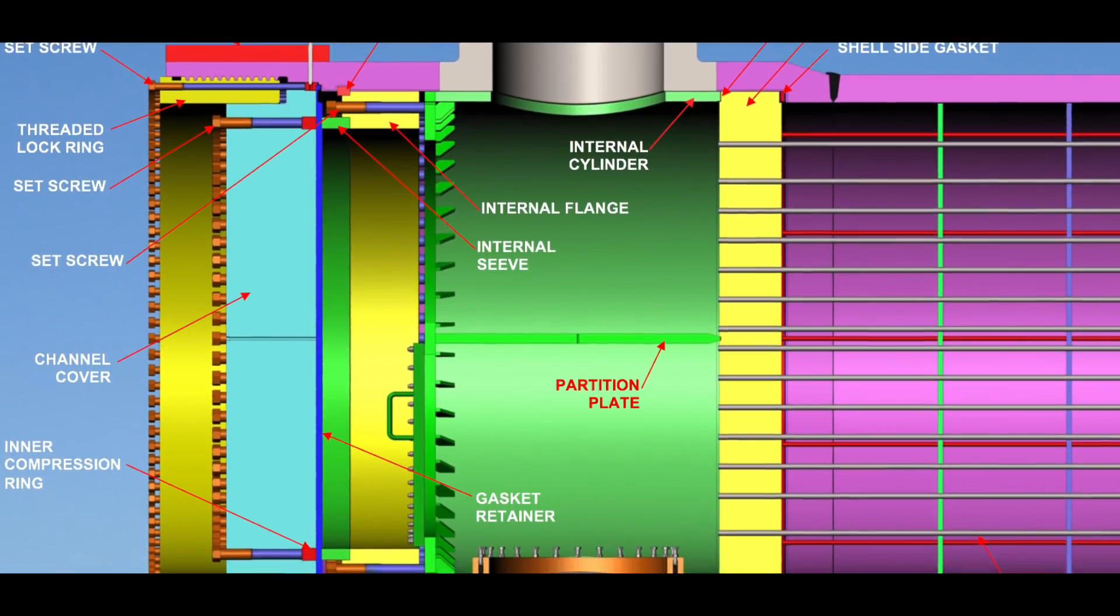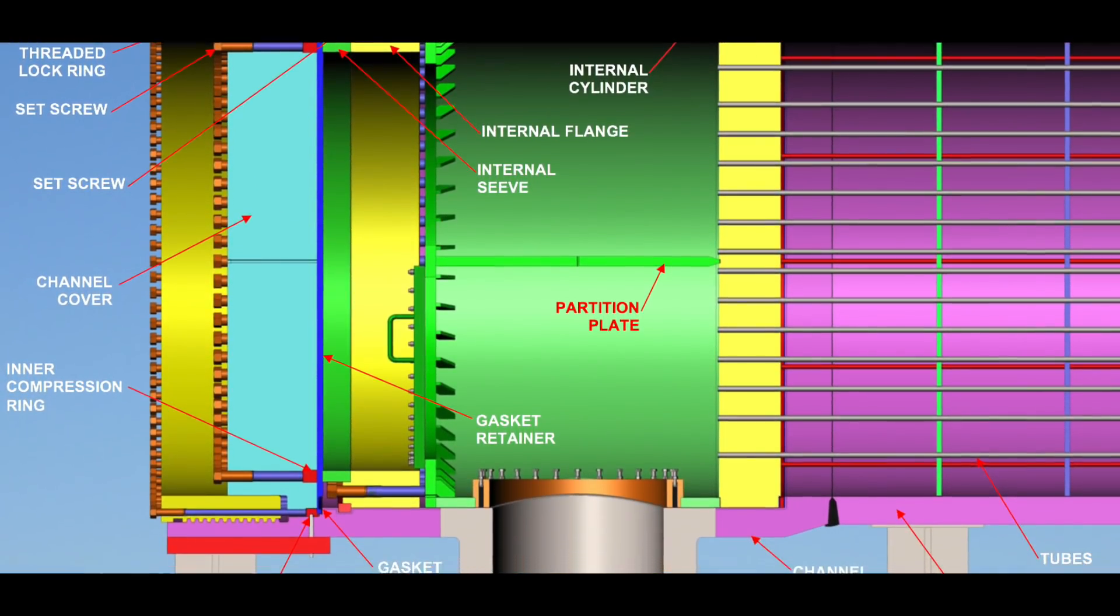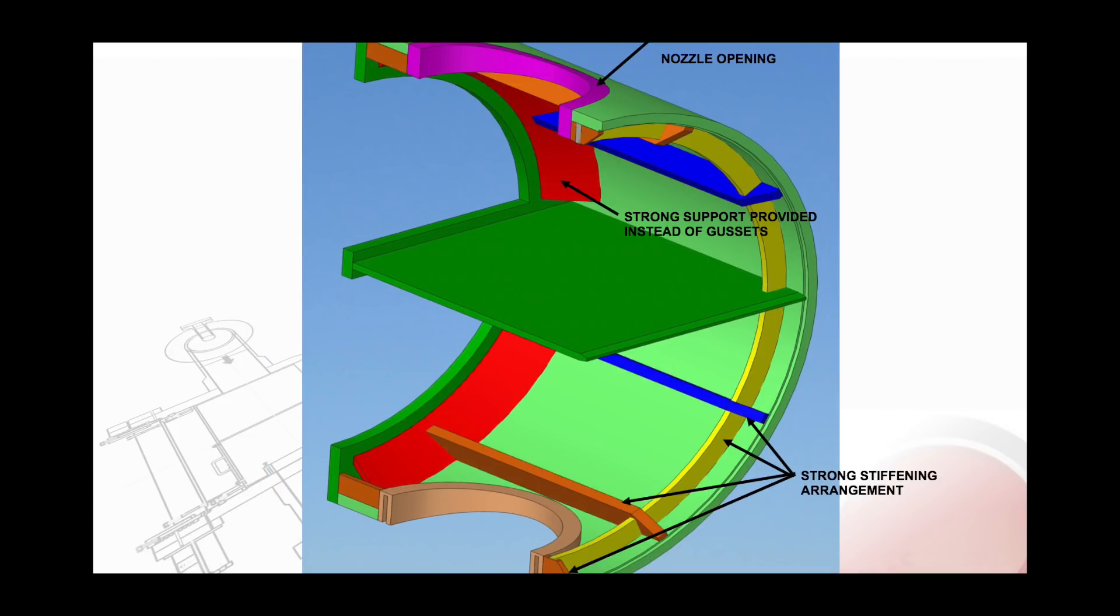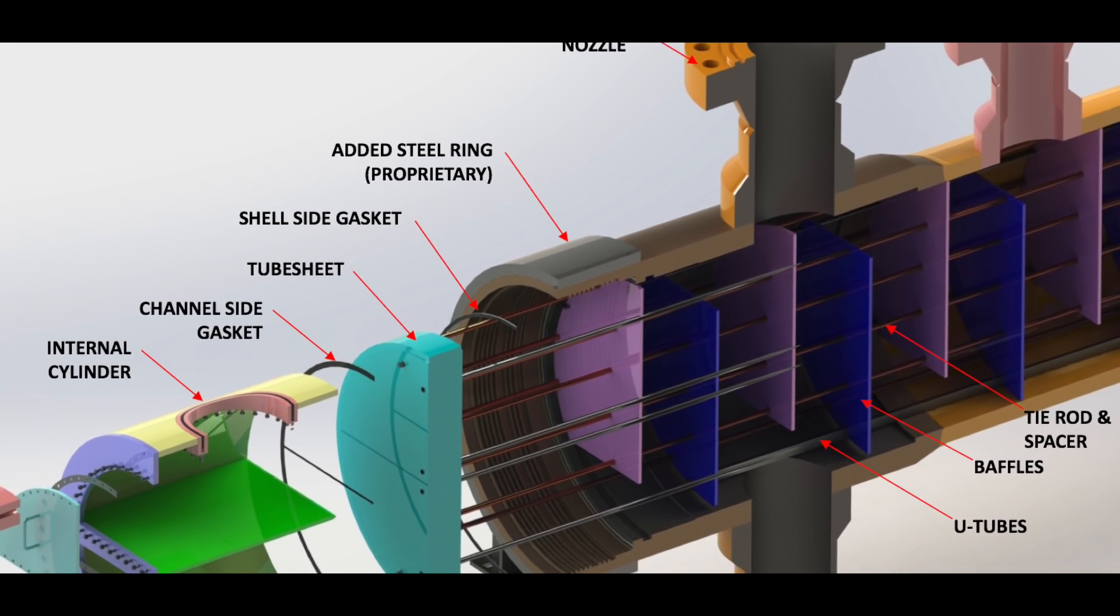Point 8: Where the shell side pressures are higher than the tube side pressures, the channel cylinder has to be rigid enough to uniformly transfer the bore load to the gasket.